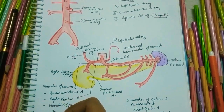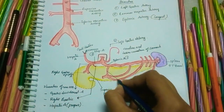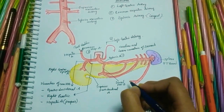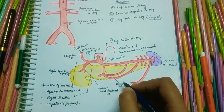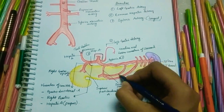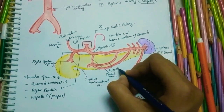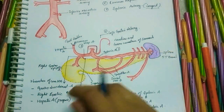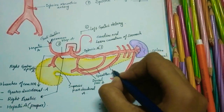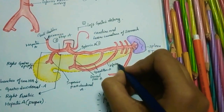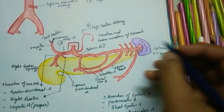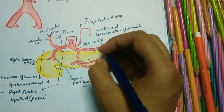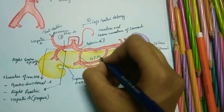Coming to the pancreatic branches: the first is the dorsal pancreatic artery, the second is the great pancreatic artery — also called the arteria pancreatica magna — and the third is the inferior pancreatic artery.